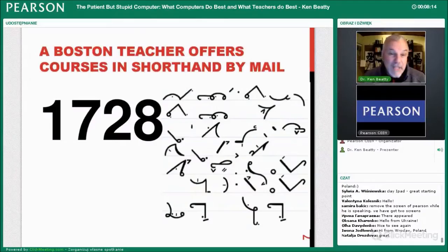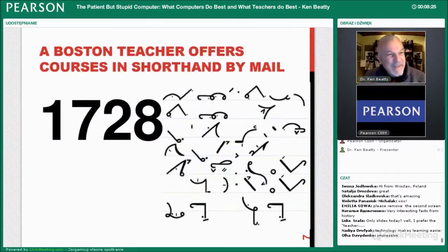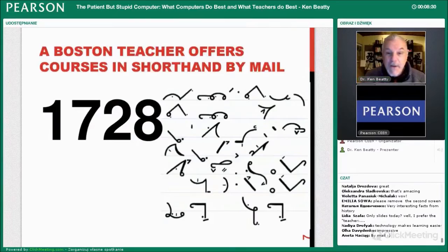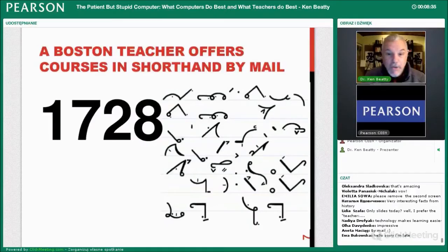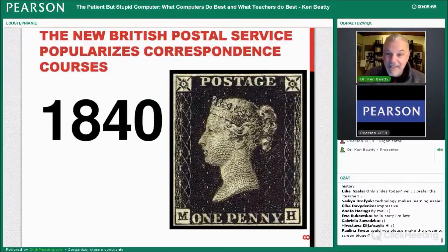In 1728, a Boston teacher offered shorthand courses by mail. Mail at that point was very difficult — there was no standardization at all. But it was interesting because he was obviously appealing to individuals living at home who wanted to learn something they couldn't learn otherwise. This is the beginning of reaching out through distance to teach someone. In 1840, when they introduced the first postage stamp, it standardized things and made correspondence courses easier.